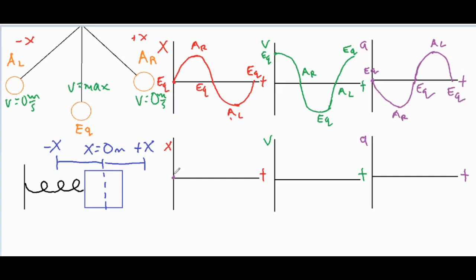The spring starts at zero, gets pushed out to its maximum positive position, and that positive position sends it back to its equilibrium position. From equilibrium it compresses the spring as much as possible, and that compression causes it to accelerate quickly back to equilibrium. So we have position zero, positive x, zero, negative x, and back to equilibrium again — showing a full cycle, one full period.